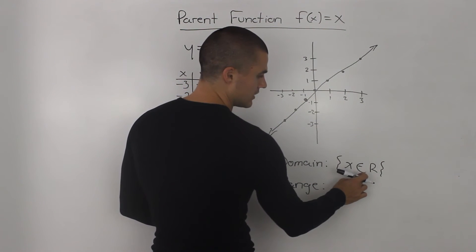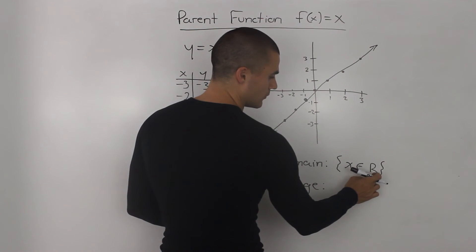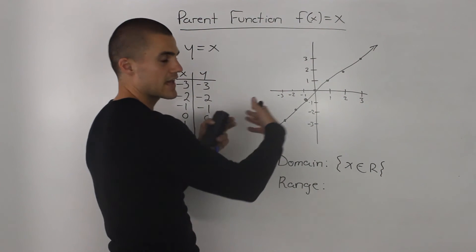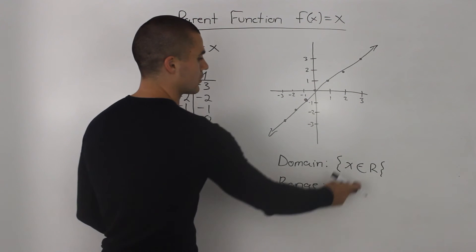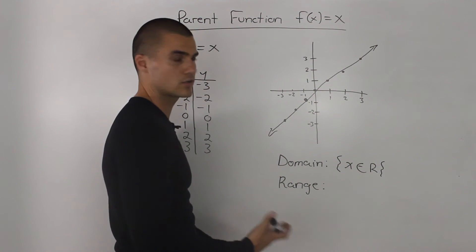this weird looking e here, an element of real numbers, this capital R. That basically means that x can be anything. You're going to see this notation a lot in your book.